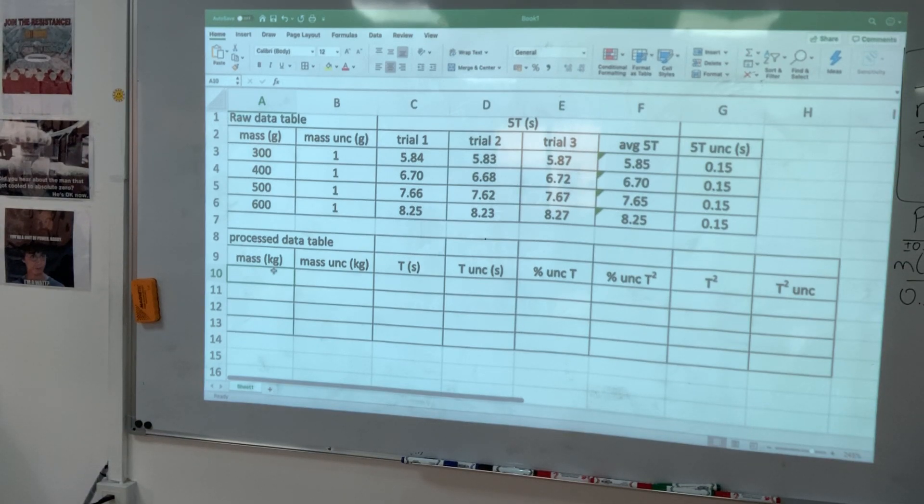So I'm going to tell Excel I'm calculating, put an equation sign. I'm going to select the cell, it will take the value, divide by 1,000, enter. Select, little dark plus sign, select, drag, drop. I have the calculated kilogram values.